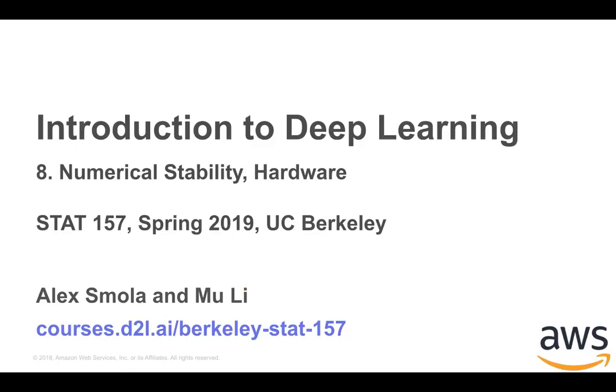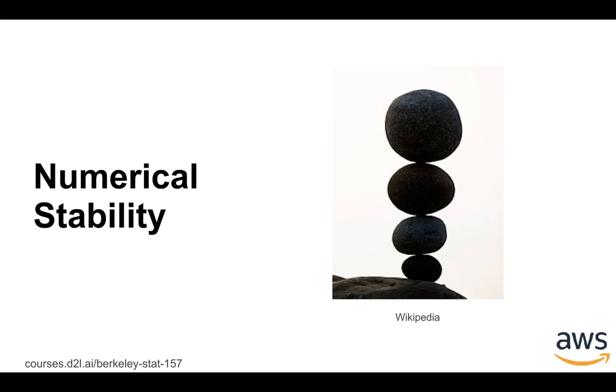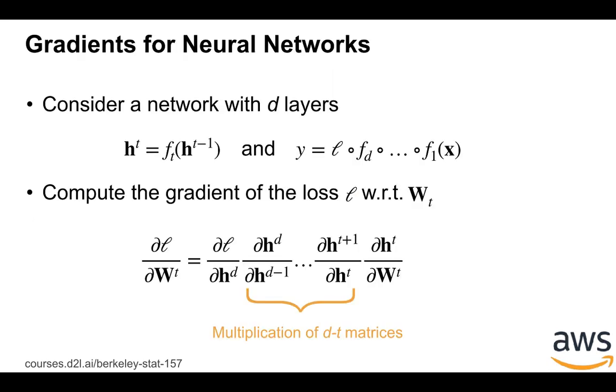This is a real record of lecture 8. Let's start with numerical stability. Consider a simple neural network. We have d layers here.